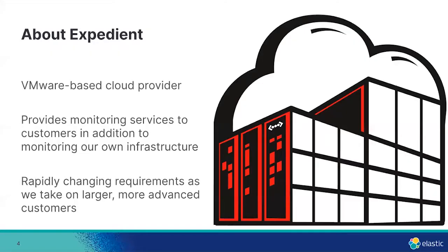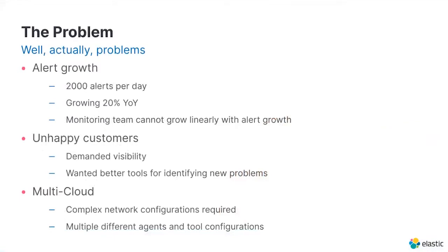To get started, a little bit about Expedient: we're a VMware-based cloud provider with data centers in about seven different cities right now and continuously growing. One of our services that we provide to clients is monitoring — in addition to monitoring our own infrastructure, we're monitoring their VMs and other workloads. We have a rapidly changing set of requirements as we take on bigger and more advanced customers, which has been great for growth but has created a couple of problems.